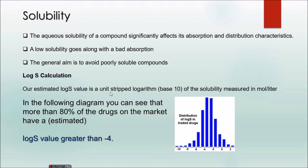The estimated log S value is a unit-stripped logarithm (log base 10) of the solubility measured in moles per liter. It is related to concentration — when a solute is dissolved in a solvent it results in some concentration, and that unit is given for this log S calculation. From statistics, more than 80% of drugs on the market have an estimated log S value greater than minus 4. So, for your molecule to be drug-like, it should have a log S value greater than minus 4.